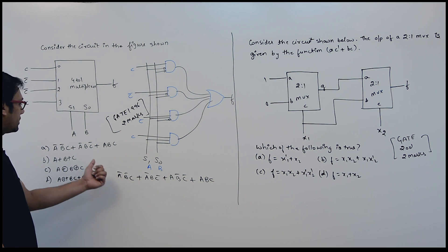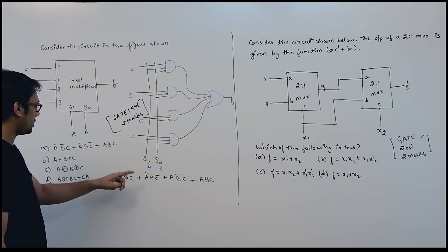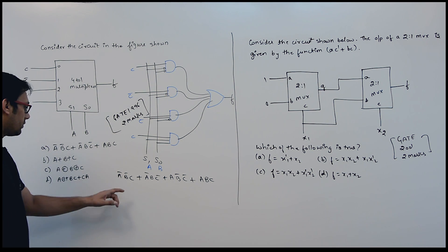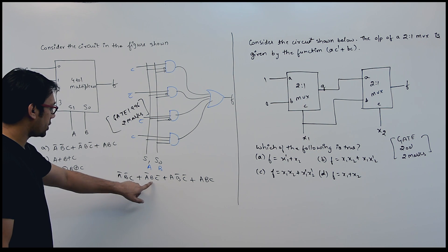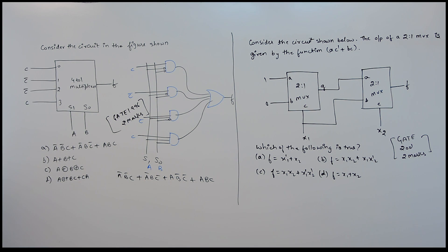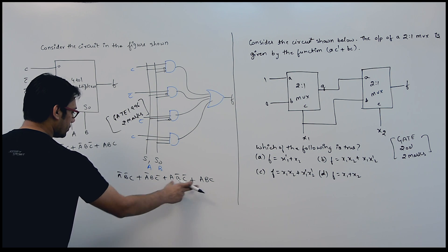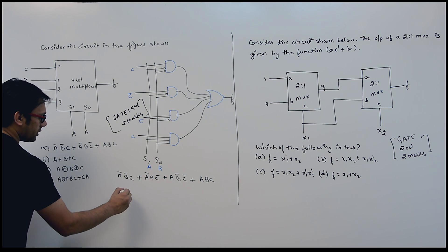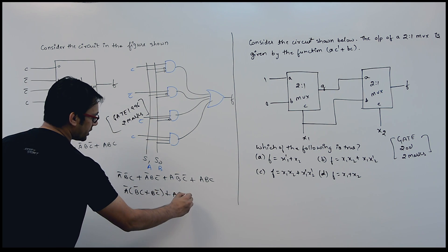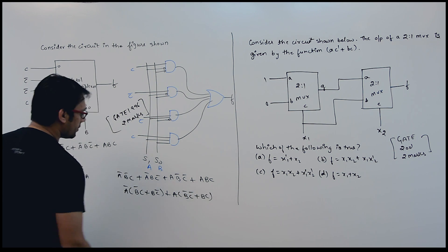So this multiplexer is representing A complement B complement C plus A complement B C complement plus A B complement C complement plus A B C. You can see none of these options directly represent this, so maybe they have minimized this circuit. Let us see if we can eliminate something. Taking A complement as common from the first two terms and A as common from the last two terms gives: A complement (B complement C plus B C complement) plus A (B complement C complement plus B C).